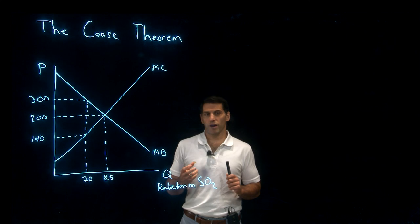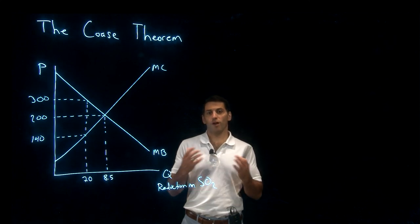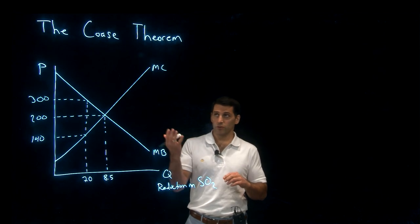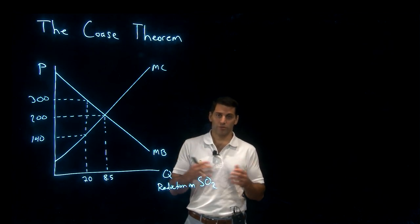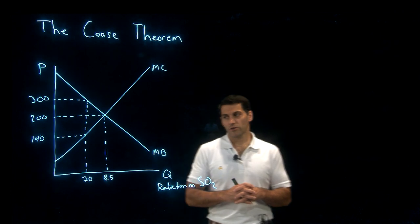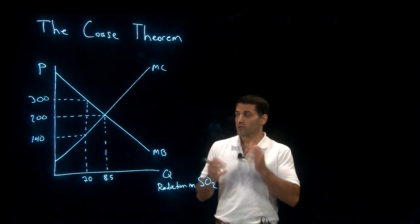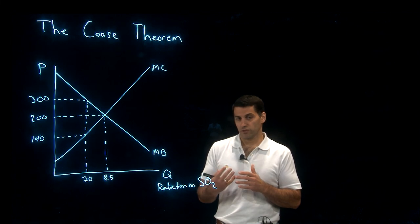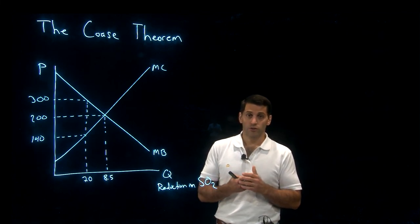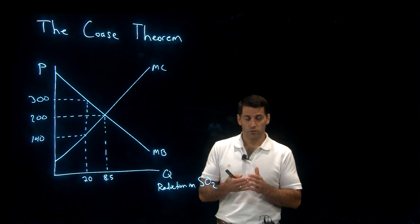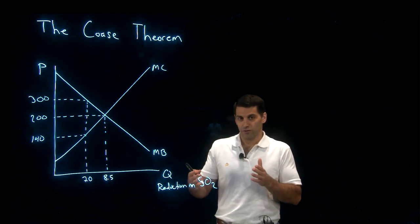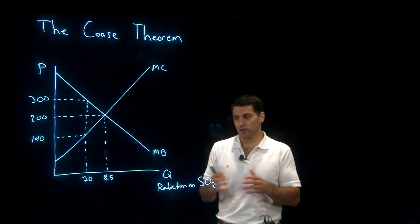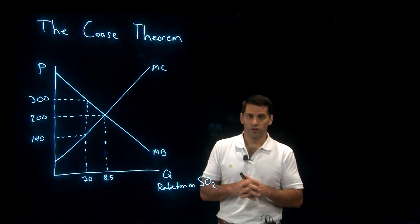In this video we're going to talk about a potential private solution to the externality problem called the Coase Theorem, named after the economist who came up with this idea. Coase's insight was that the reason we're getting an inefficient level of production is because nobody has the property rights for whatever is suffering the pollution.